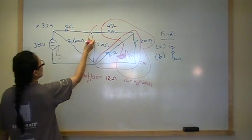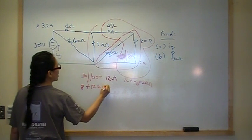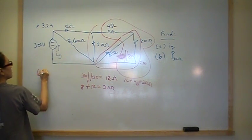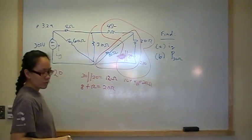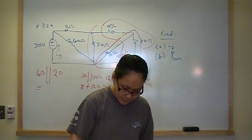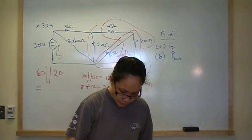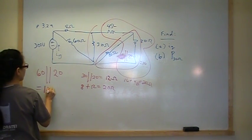And 12 ohms is in series with that, so 8 plus 12 is going to give me 20 ohms. So now we have 60 in parallel with 20, and that will give me 1 divided by 60 plus 1 divided by 20, inverse that. So all of this is the same thing as 15 ohms.